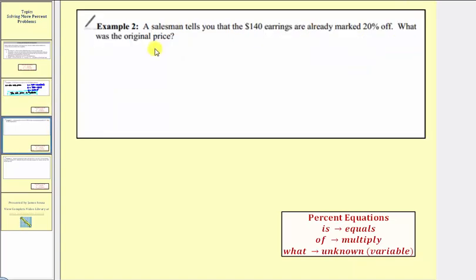Example two is a little bit more challenging. A salesperson tells you that the $140 earrings are already marked 20% off. What was the original price? So notice here our goal is to determine the original price. So let's define the variable p for p equals the original price.